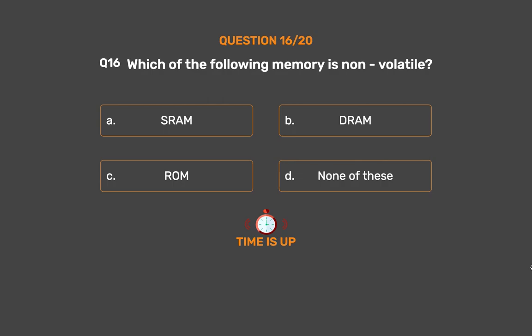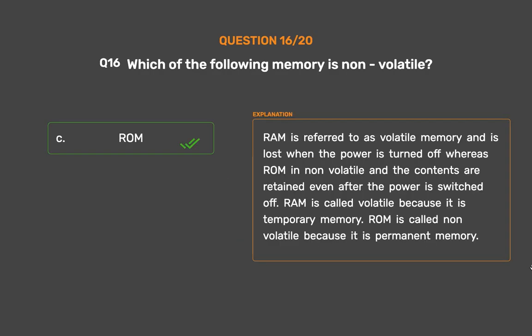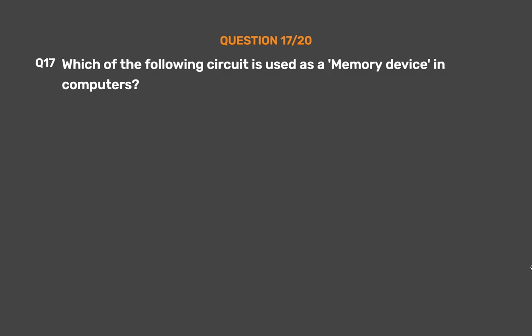The correct answer is Option C: ROM. RAM is referred to as volatile memory and is lost when the power is turned off, whereas ROM is non-volatile and the contents are retained even after the power is switched off. RAM is called volatile because it is temporary memory; ROM is called non-volatile because it is permanent memory.